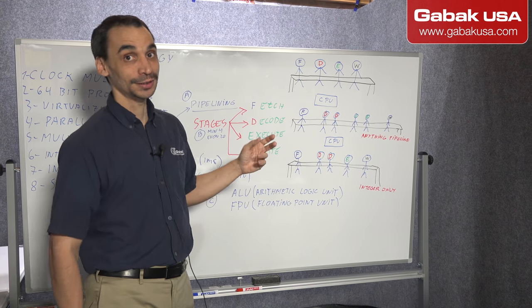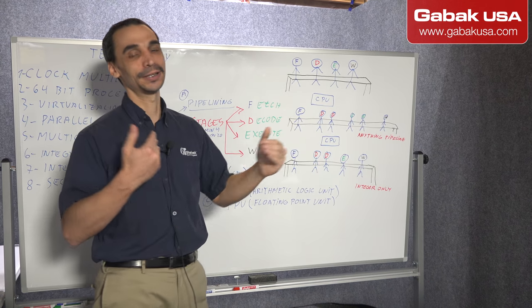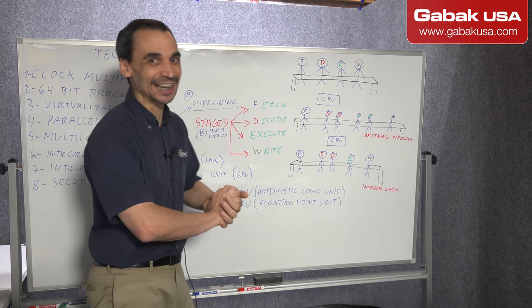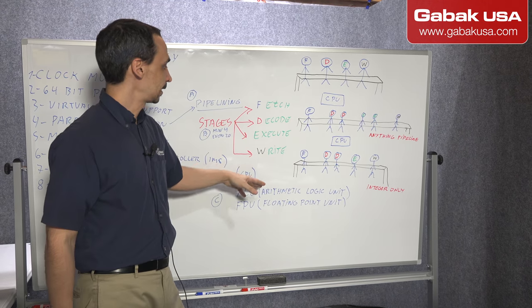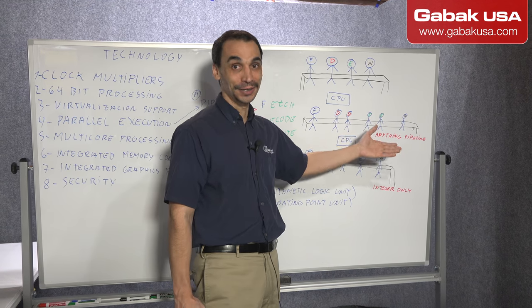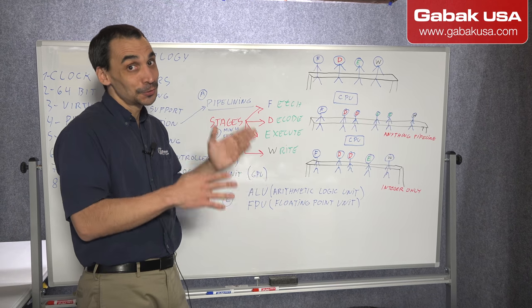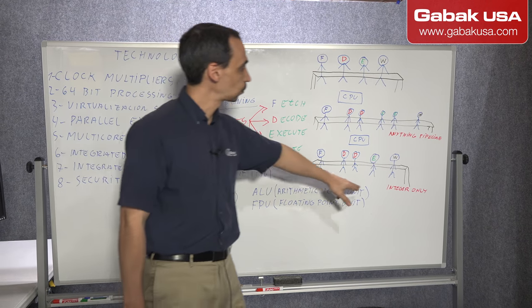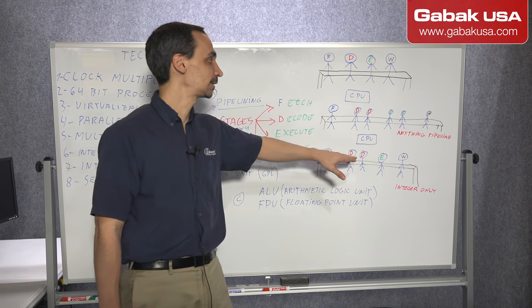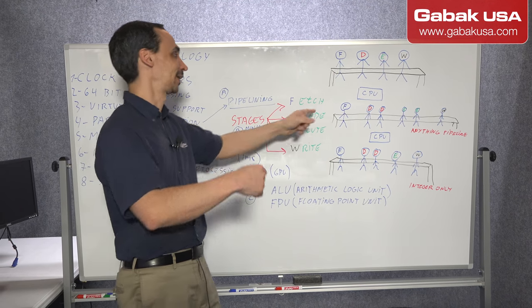In the modern CPUs, you have many guys working all the time. When the pipeline is full, they are working 24 seven. That is the good thing about the CPUs nowadays. In this case, we have two different pipelines. One is integer only, for instance, and here, anything pipeline.